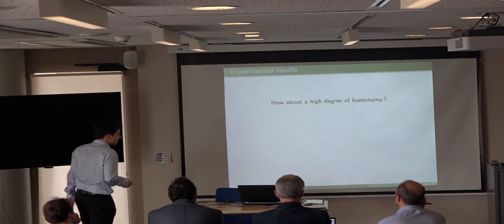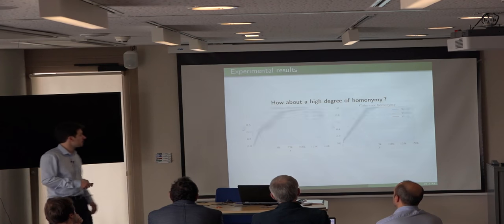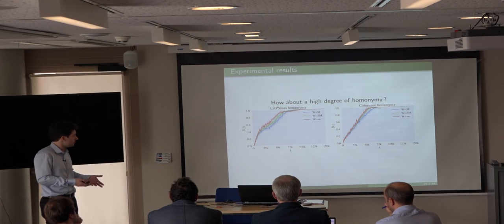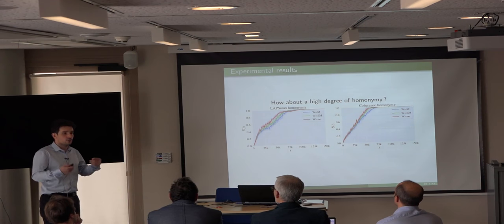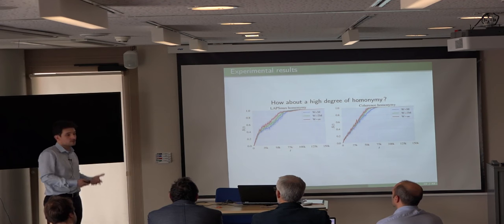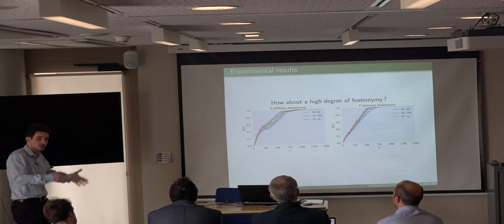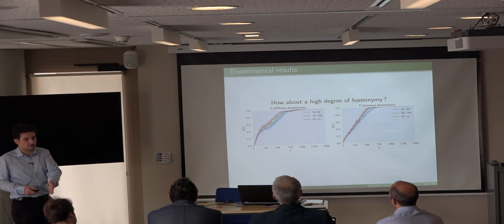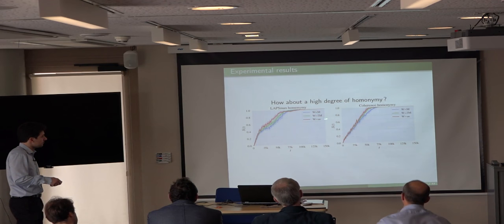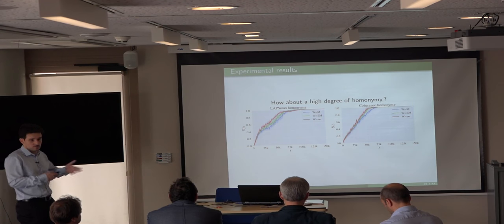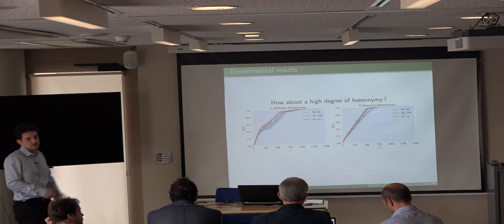We can also ask about homonymy: if agents have fewer possible signals available — the worst case being the same number of words as meanings — they are more eager to use the same word for two different objects, introducing more complexity. Showing results for both strategies with unbounded words, twice the number of meanings, or exactly the number of meanings, the strategies behave only slightly differently and we can say they are robust to this pressure.